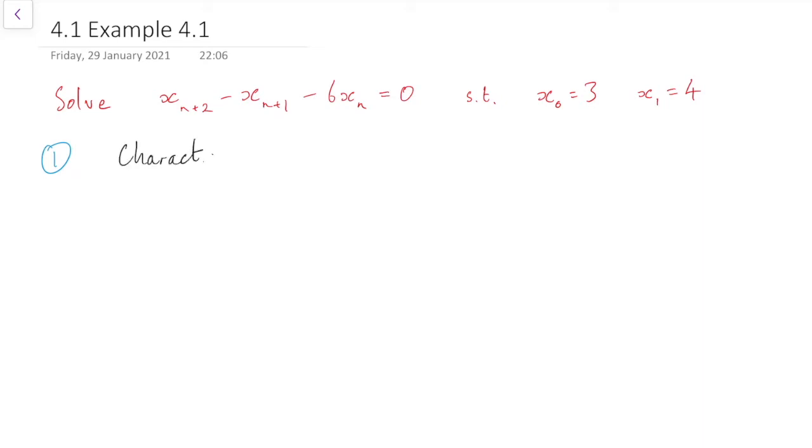So the characteristic equation, as you will have read, lambda squared means replace the x_{n+2} with a lambda squared, the x_{n+1} with a lambda, and the x_n just with 1. So we get lambda squared minus lambda minus 6 equals 0.